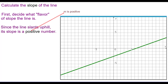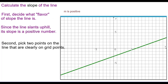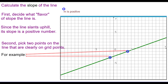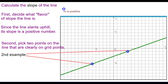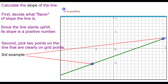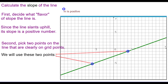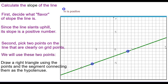I'm going to make note that M, our abbreviation for slope, is positive. Second, pick two points that are clearly on grid points that are on the line. There are several we could use and several we don't want to use. For our example, we'll use these two points right here. We're going to draw a right triangle using these two points and the segment connecting them as the hypotenuse of the right triangle.